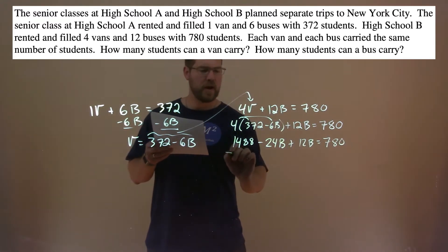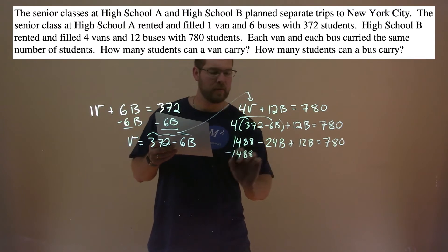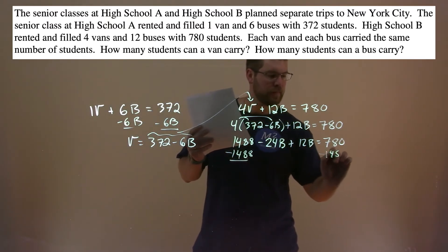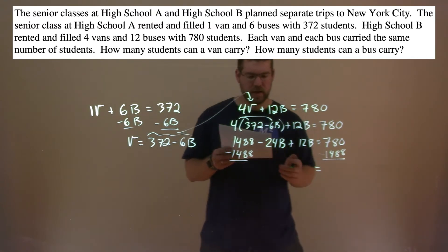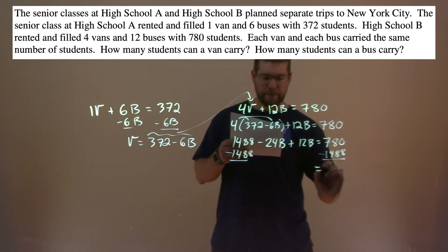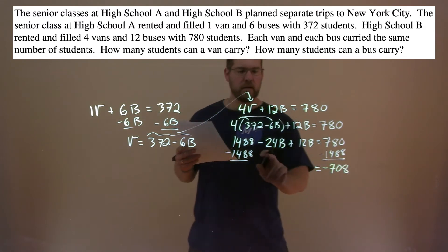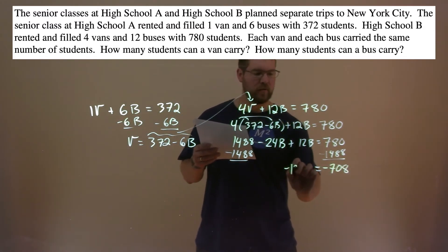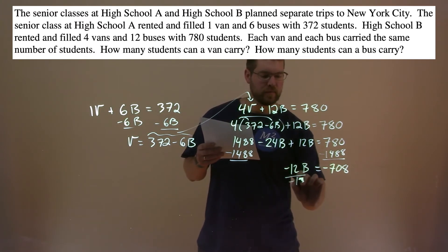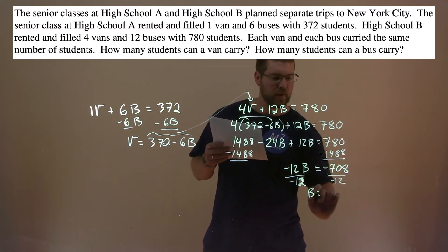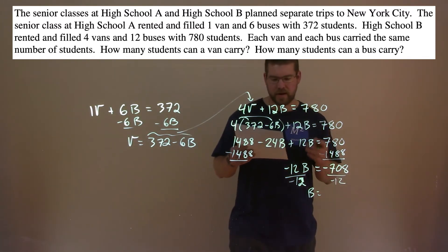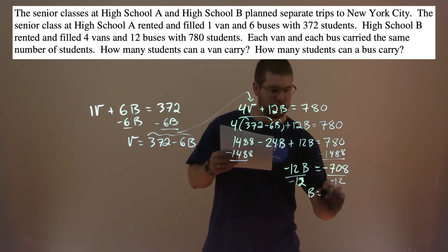4 times 6B is minus 24B, plus 12B equals 780. I subtract 1488 from both sides. And 780 minus 1488 is minus 708. Negative 24B plus 12B is minus 12B. Divide both sides by minus 12. And B equals, well, negative 708 divided by negative 12 is a positive 59.